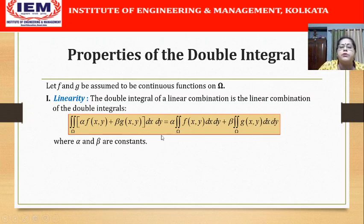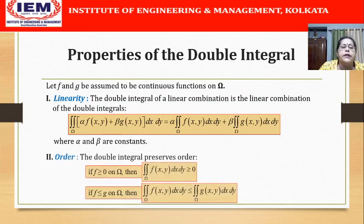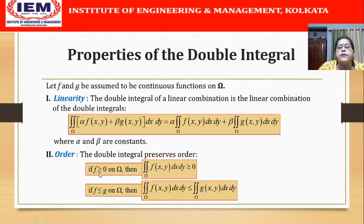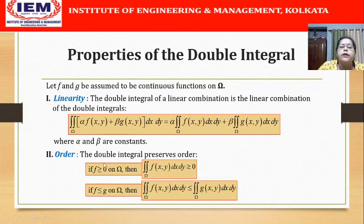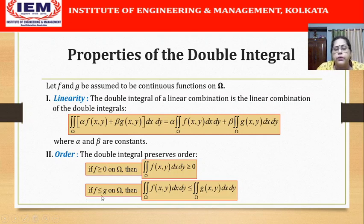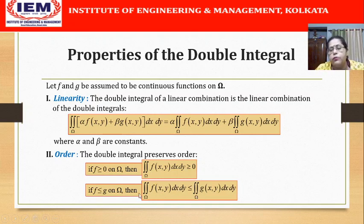You may recollect a very similar property from single integration. The next property is order: the double integral preserves order. If f is greater than or equal to 0 on omega, then the double integral of f(x,y) dx dy on omega is also greater than or equal to 0 — meaning if your function is non-negative on a region, the double integral over that region will also be non-negative. Similarly, if f is less than or equal to g on omega, then the double integral of f is less than or equal to the double integral of g over the same region omega.